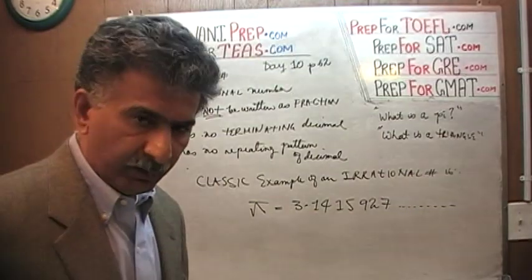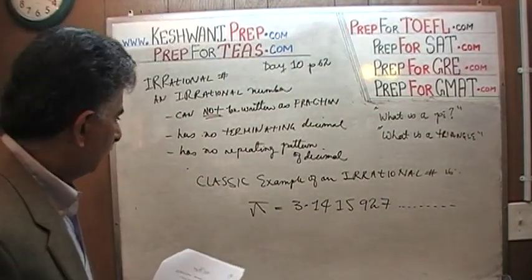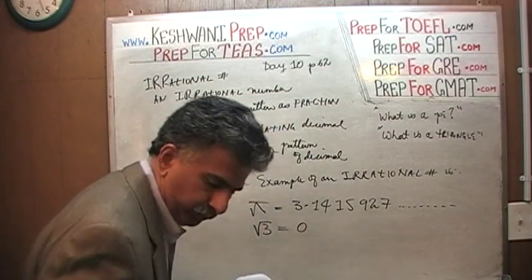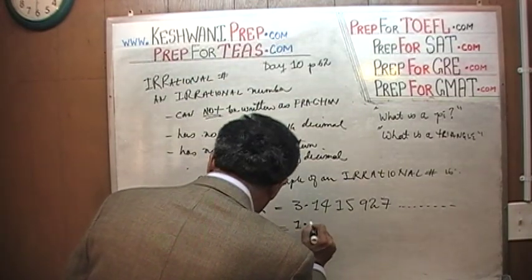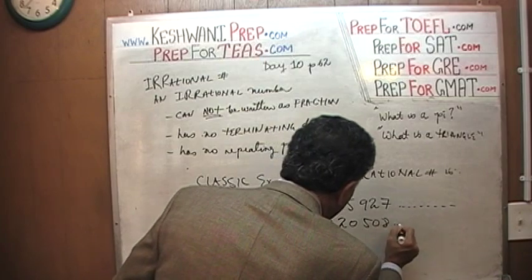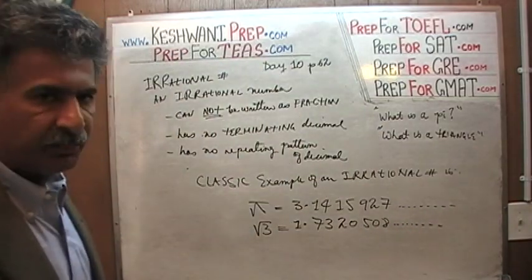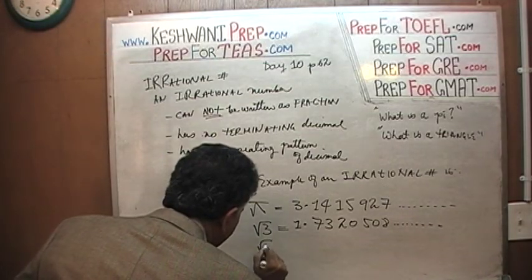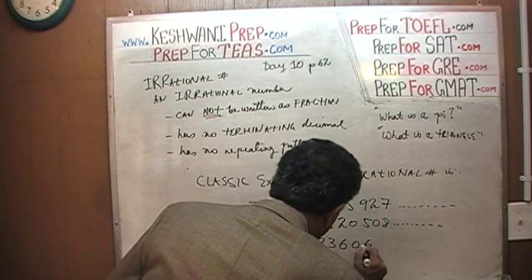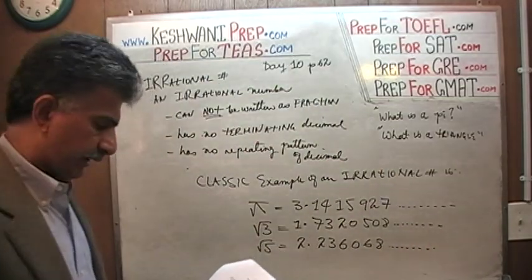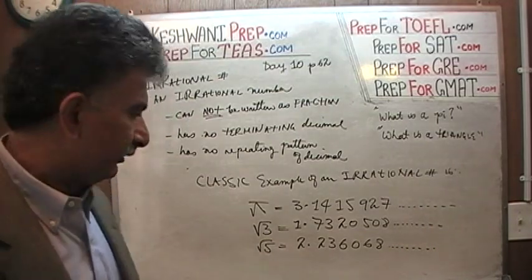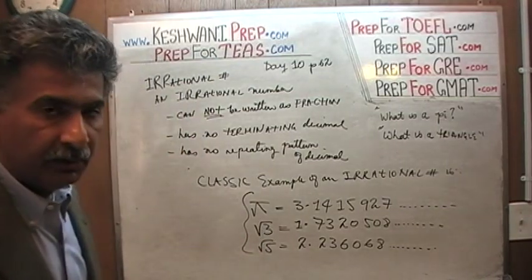Let me give you one more example of an irrational number — a number that never ends. Pi is one example; here is another: root 3. The square root of 3 is 1.7320508... whatever, and ever — it is never going to end and it cannot be expressed as a fraction. Square root of 5 is 2.2360668... on and on and on — again, it does not end. These are non-terminating decimals — that is what they are called in the jargon of mathematics.